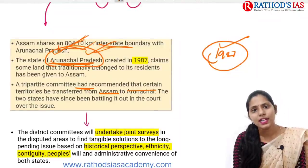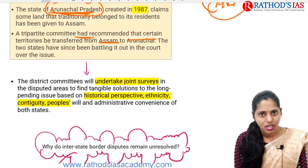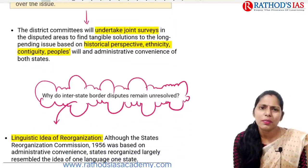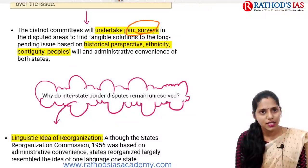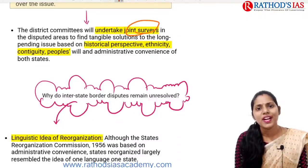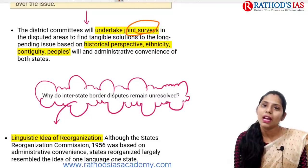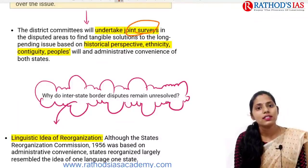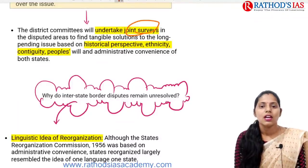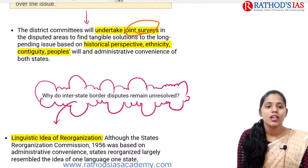Let us see what the district committees will do. These district committees will mainly undertake joint surveys in the disputed areas and try to find tangible solutions to these long-pending issues. They will come up with solutions based on historical perspective, ethnicity, and contiguity. Most of the northeastern states are inhabited by tribal peoples, so we need to take their ethnicity into consideration as well.